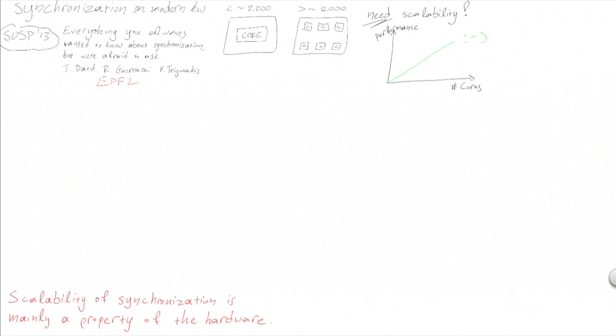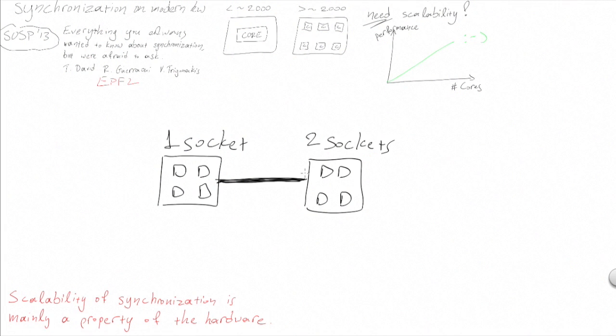Nowadays, typical server machines consist of two to four sockets. This means that vendors glue two or more chips together to create one larger machine with more processing power and more memory. We saw that both on Intel and AMD processors, the communication of two threads across sockets is two to eight times more expensive than within the socket.